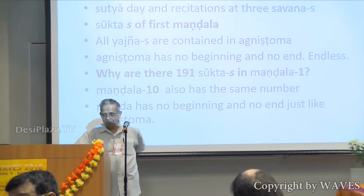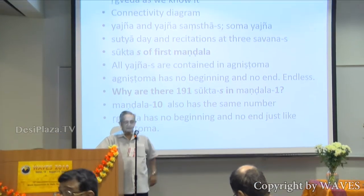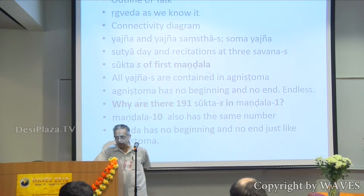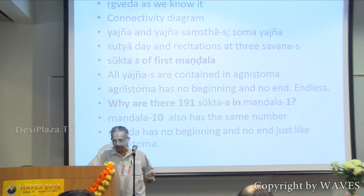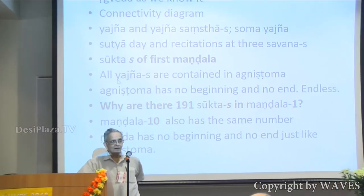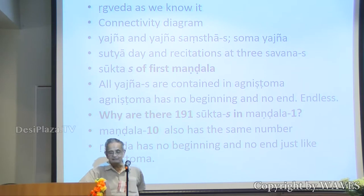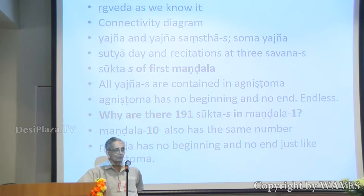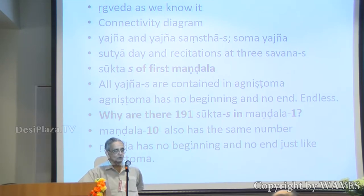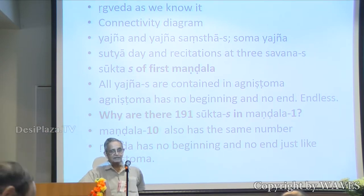The Soma Yajna actually forms the basis of the structure of Rig Veda. All Yajnas are contained in Agnishtoma — this is an important concept. Agnishtoma has no beginning and no end, and it is endless, and it is demonstrated. And then I'm going to talk about why there are 191 Suktas in the first mandala, and exactly the same number in the tenth mandala, and what is the significance of that.